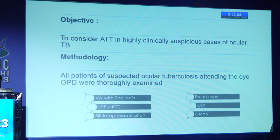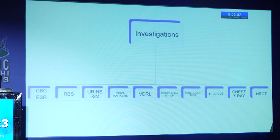The objective is to consider ATT in highly clinically suspicious cases of ocular TB. During methodology, all patients of suspected ocular tuberculosis attending the IOPD were thoroughly examined with investigations including CBC, ESR, RBS, urine routine microscopy, viral markers, VDRL, toxoplasma, IgM, tuberculin test, HLA-B27, chest X-ray and HRCT, performed according to the needs of the patient.